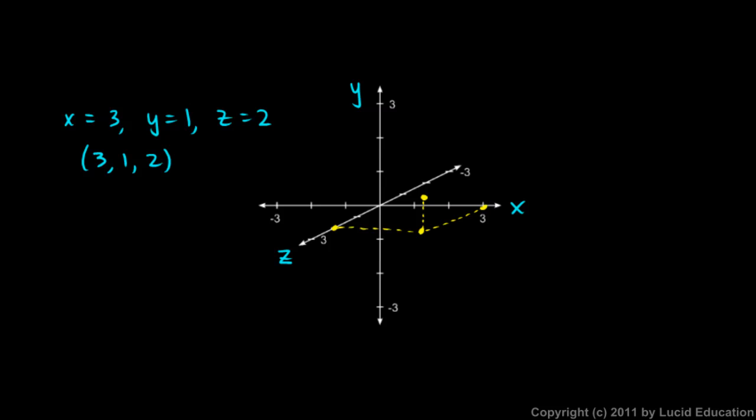And that's a little bit hard to picture because we're trying to represent 3 dimensions on a flat screen, which is inherently difficult to do. But the point you should understand is that for 3 dimensions, we need 3 variables.